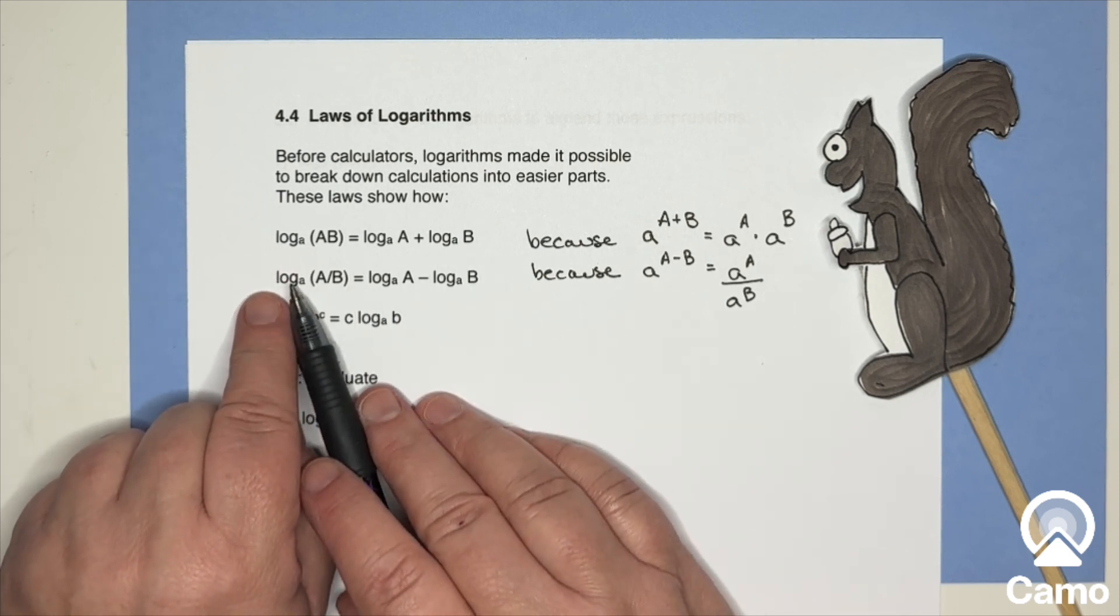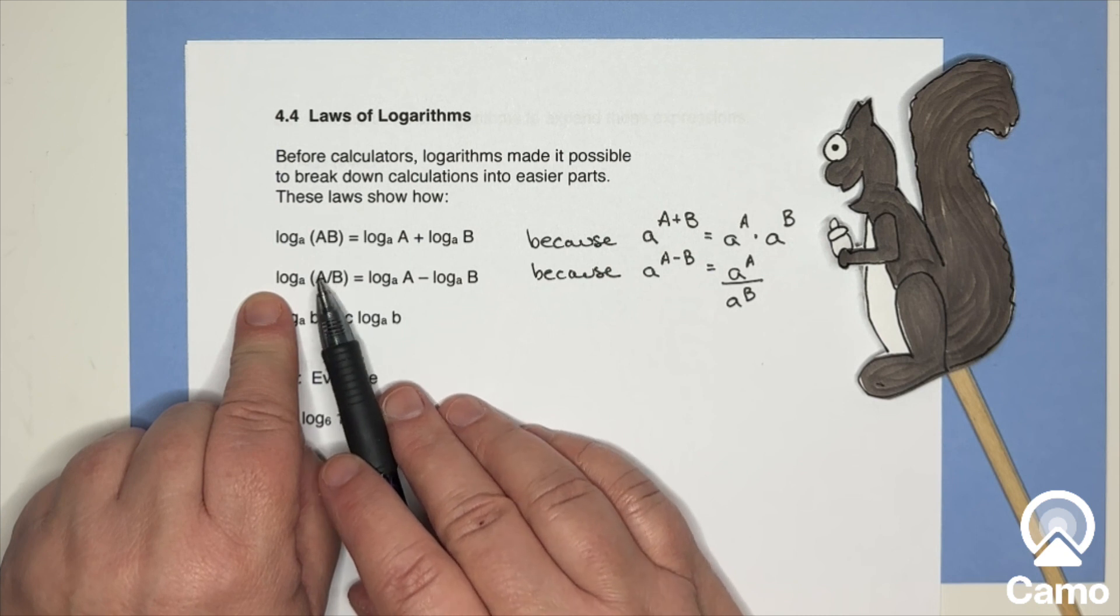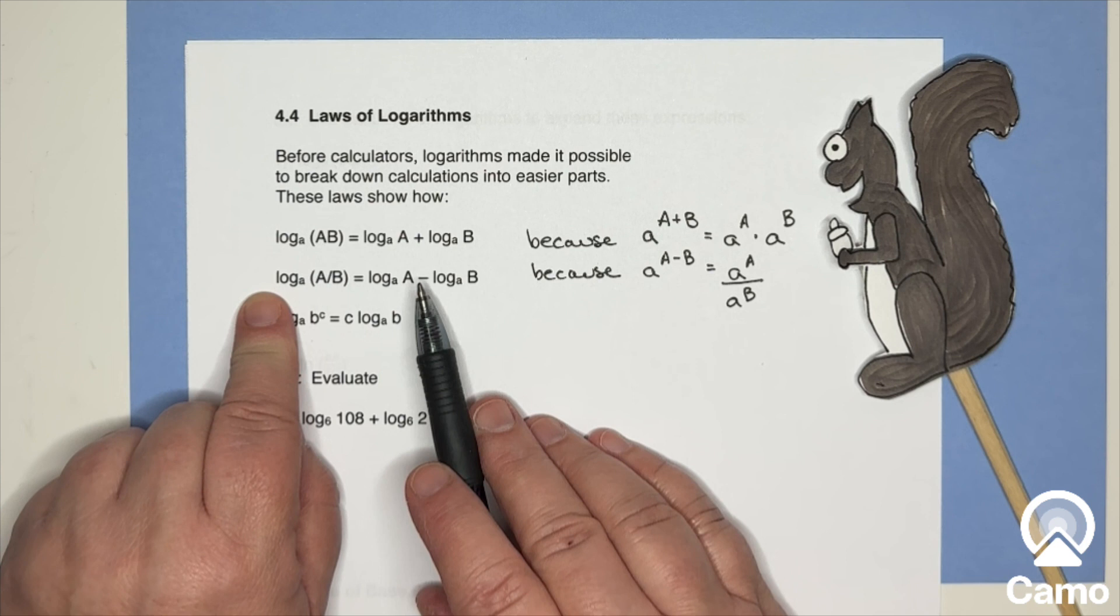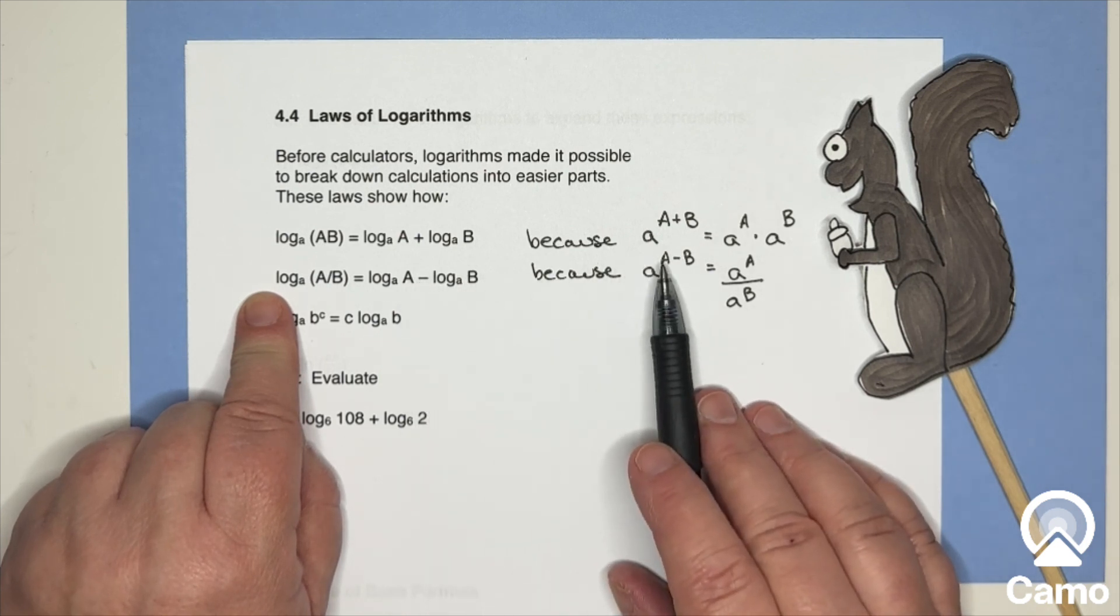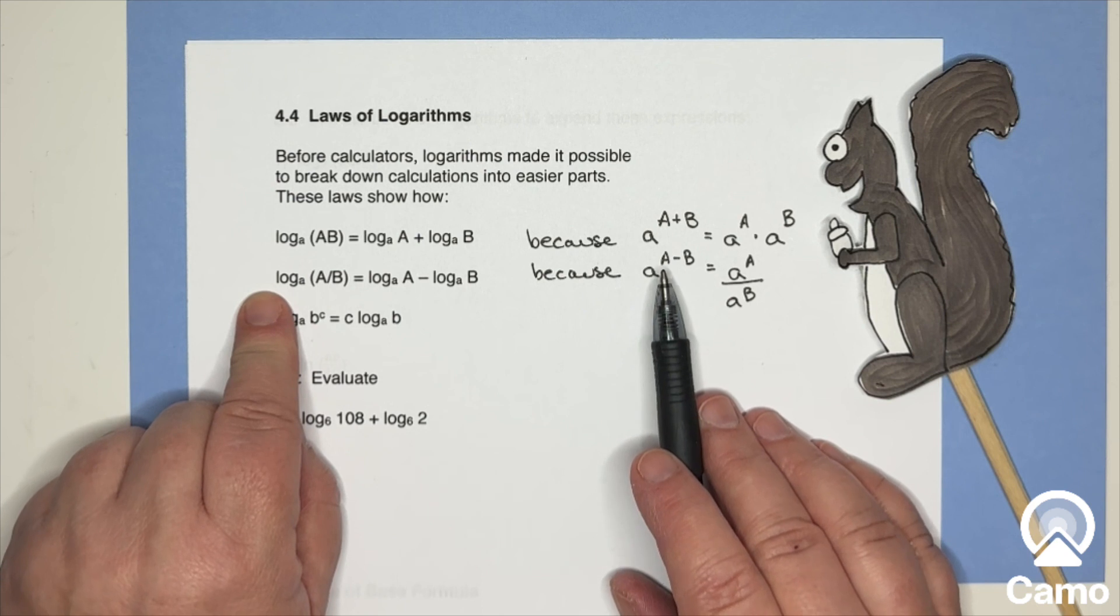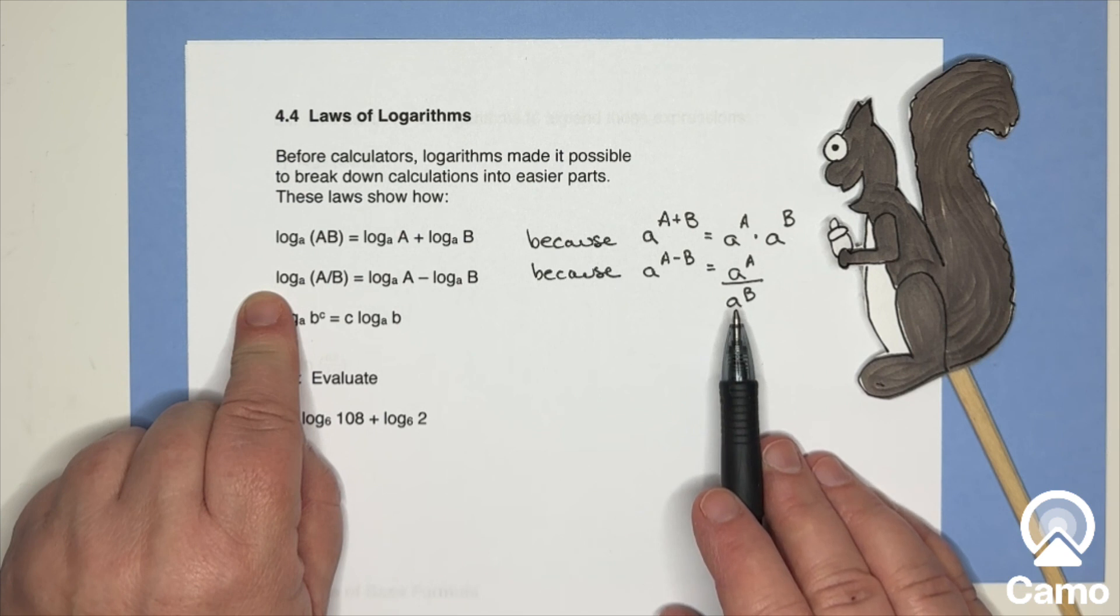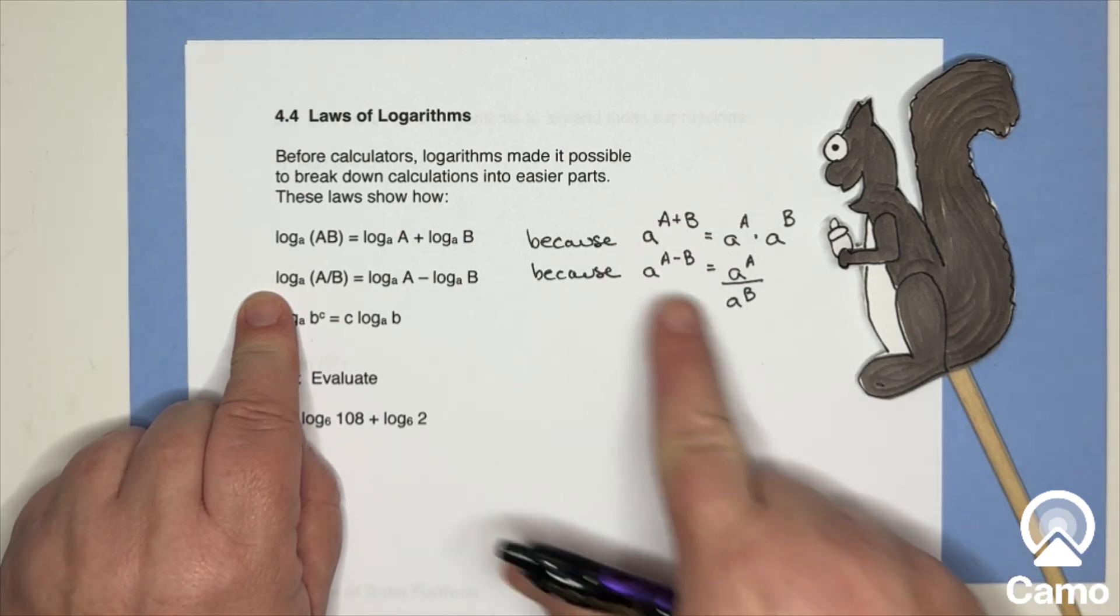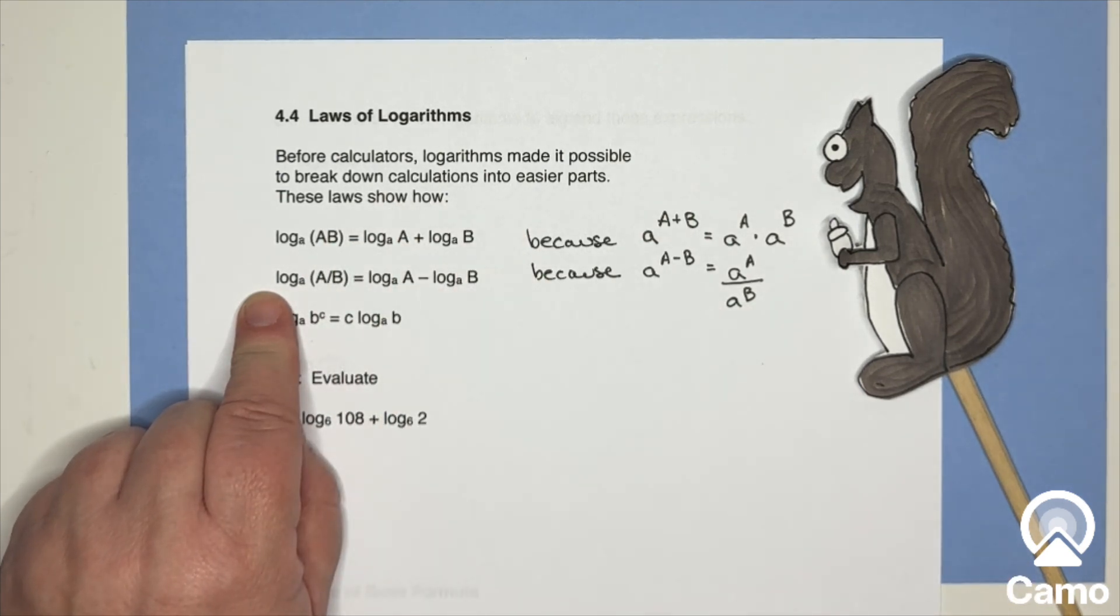And then here, log base a of the ratio, so A divided by B is log base a of A minus log base a of B. And again, if you have with exponents, a minus b as an exponent, that means a is on top and b is on the bottom and you've got a ratio. So these rules of exponents are why these rules of logarithms exist.